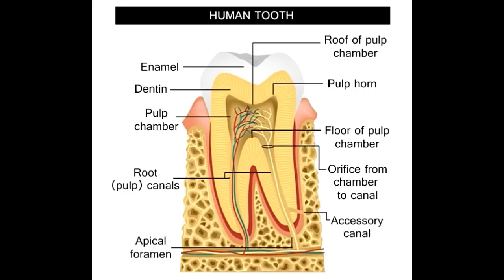Structure and anatomy of a human tooth: The enamel, dentin, pulp, cementum, and the periodontal ligaments are important parts of the human tooth anatomy. While enamel, dentin, and cementum are the hard tissues present in a human tooth, the pulp is a soft, living tissue. Let's understand the structure and functions of the components of a human tooth with the help of the labeled human tooth diagram provided below.